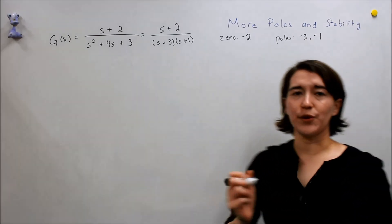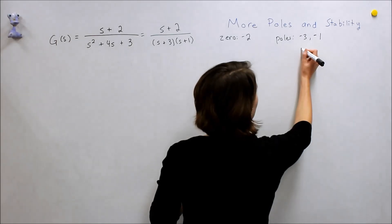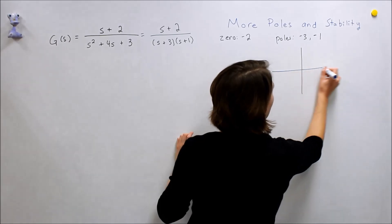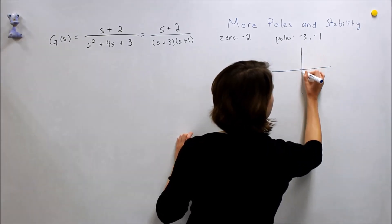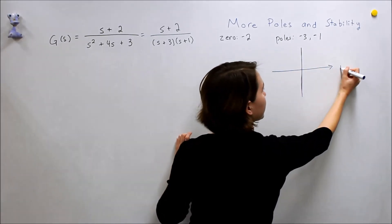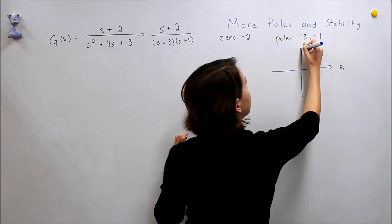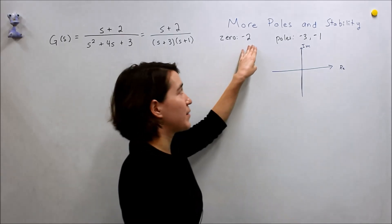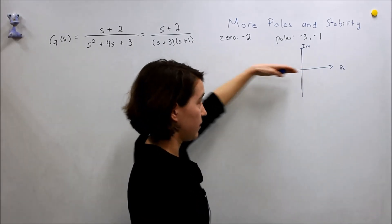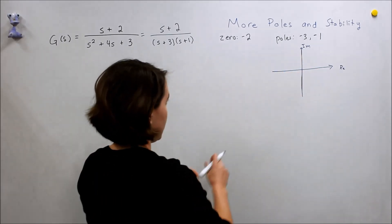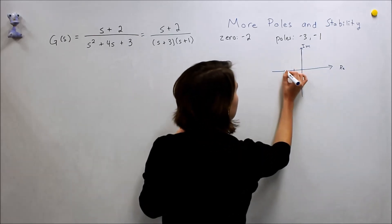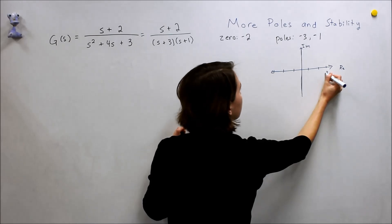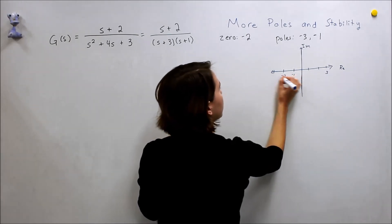Just for review, let's plot this, make a pole zero plot here. Here's the real and here's the imaginary. These all happen to be real, so they will just be on the real axis. We'll just do 1, 2, 3 here, and negative 1, negative 2, negative 3.